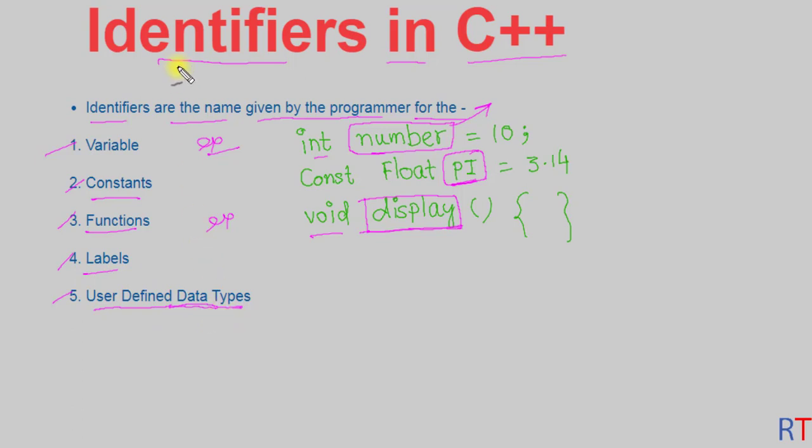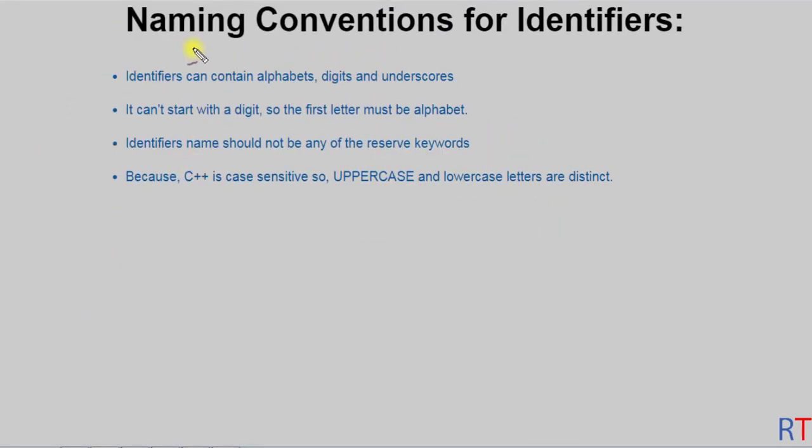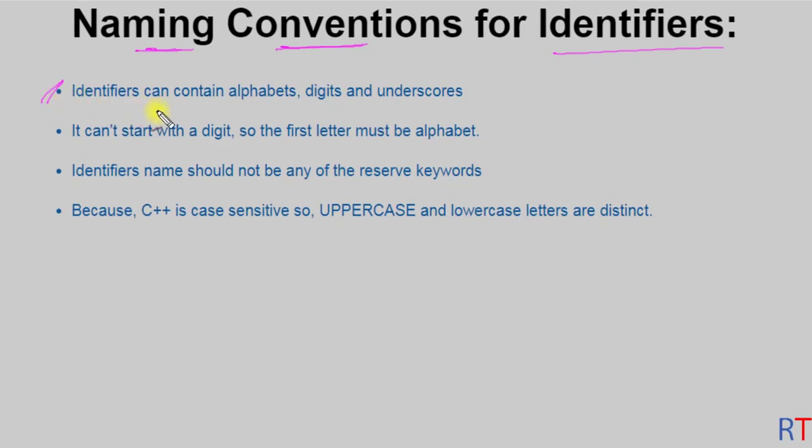Now let's talk about naming conventions. There are some naming conventions one should follow while creating an identifier. First, identifiers can contain alphabets from A to Z, digits from 0 to 9, and also underscores.